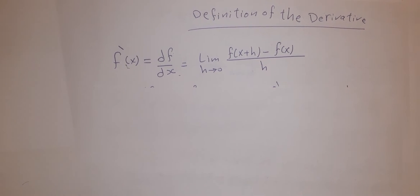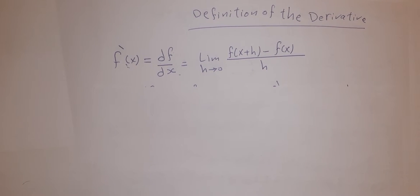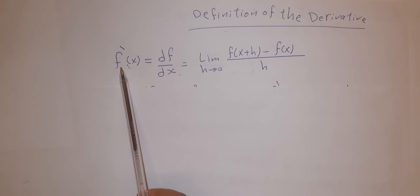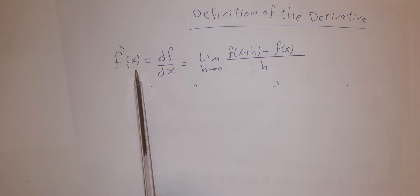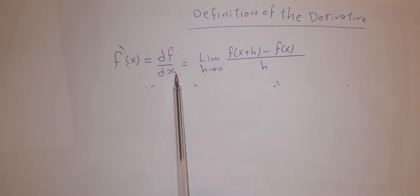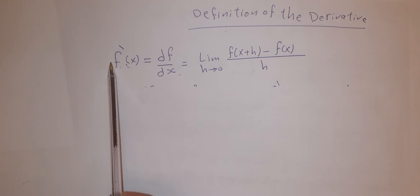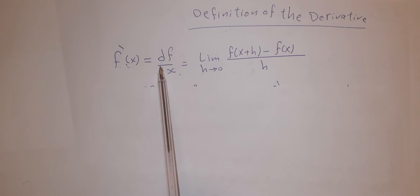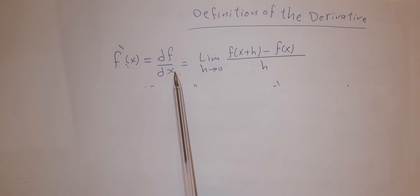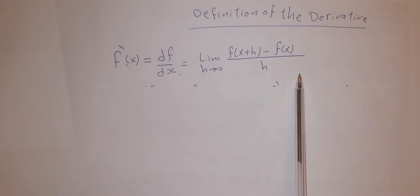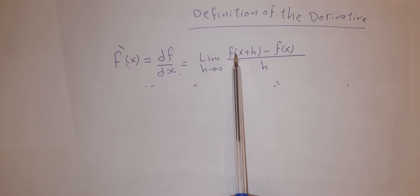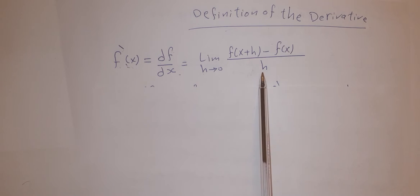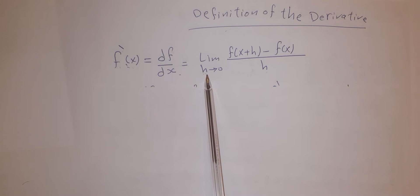Hello everybody. Now we are going to discuss the derivative. The definition of derivative f prime of x — the first derivative of f(x), also written as df/dx — can be calculated using the rule: the limit of [f(x+h) − f(x)] / h as h tends to zero.